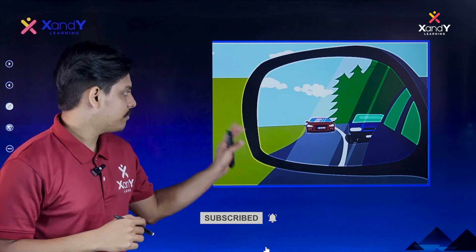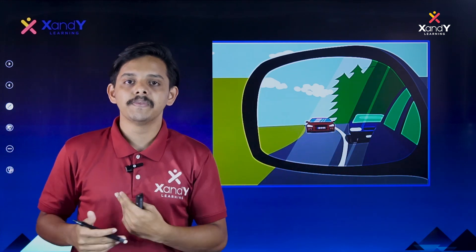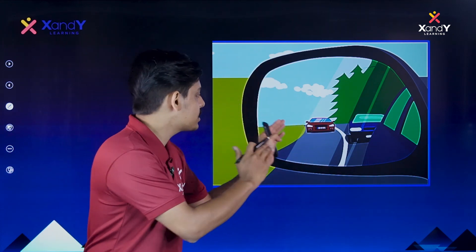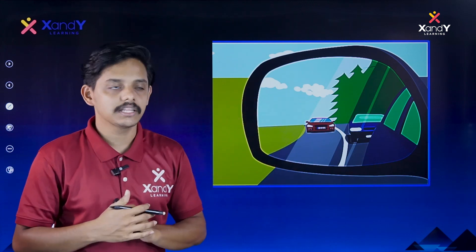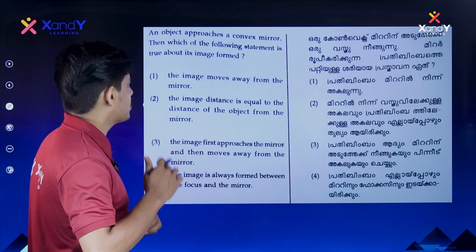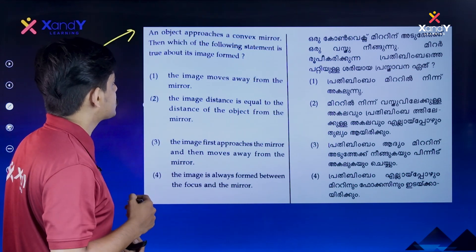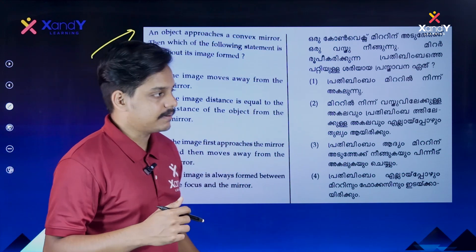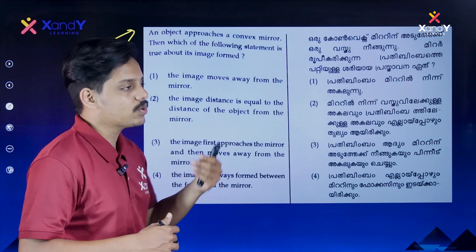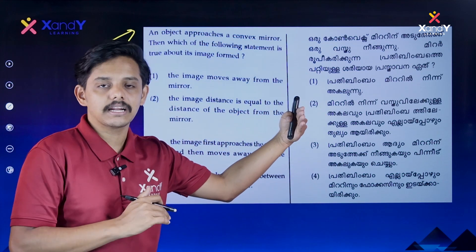We have a real-life example with a rear view mirror — the image is always virtual. Next question: An object approaches a convex mirror. Which of the following statements is true about the image formed? So consider a convex mirror, like a rear view mirror on a bike. An object is approaching the mirror.